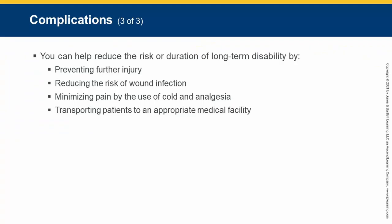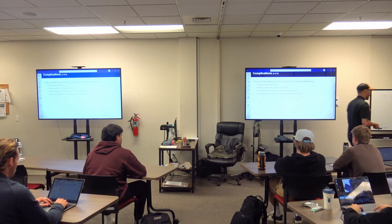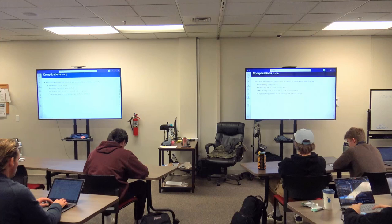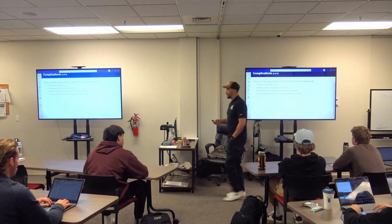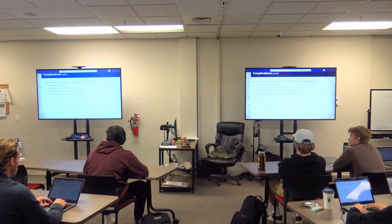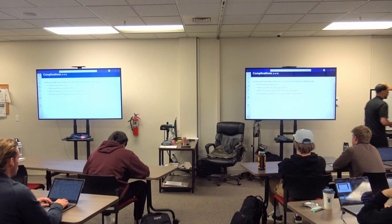We can reduce the risk of long-term disability. Splinting stops further injury and holds things in place. We can reduce the risk of wound infection by brushing off debris and irrigating with saline. Pain control helps — not because pain kills, but because a comfortable patient leaves the injury alone. And make sure they're transported to the correct facility — ideally a trauma center.